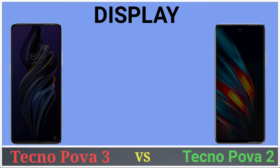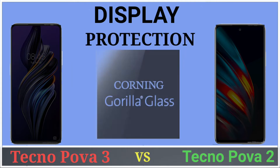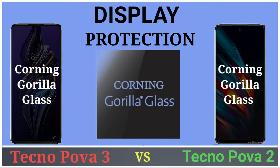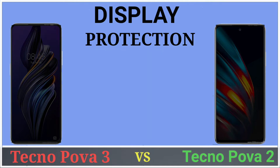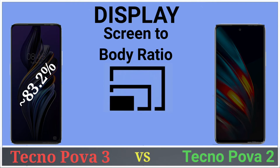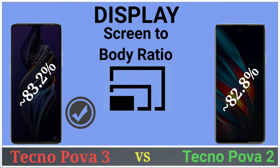Protection: both Tecno Pova 3 and Tecno Pova 2 have Corning Gorilla Glass protection. Screen-to-body ratio: Tecno Pova 3 has 83.2% and Tecno Pova 2 has 82.8% screen-to-body ratio.